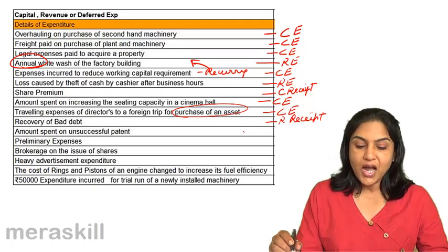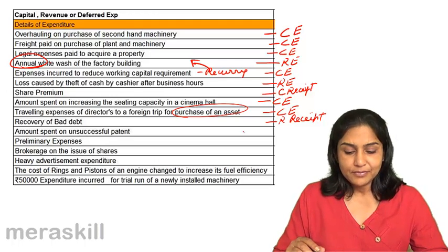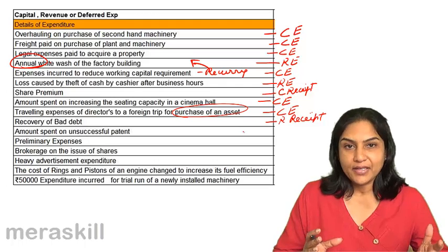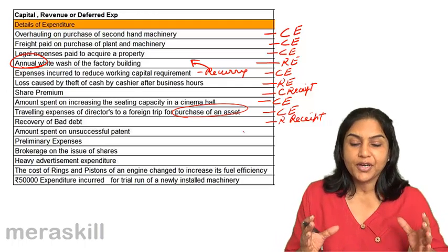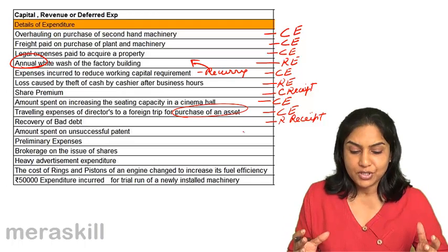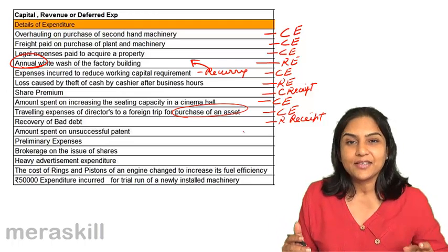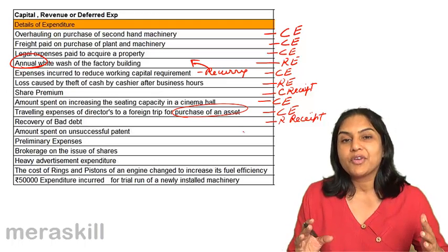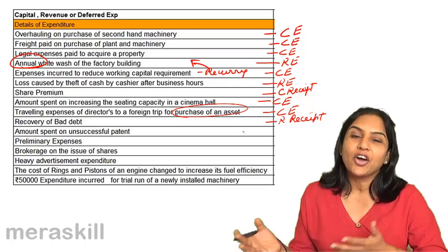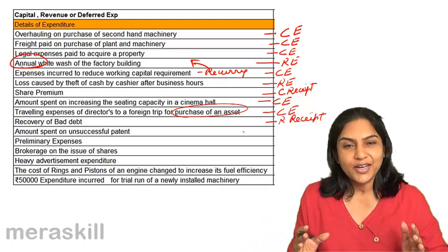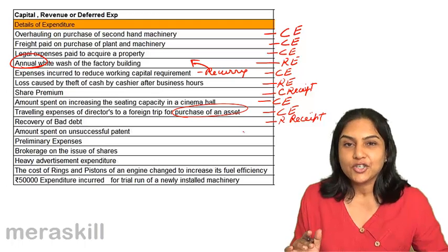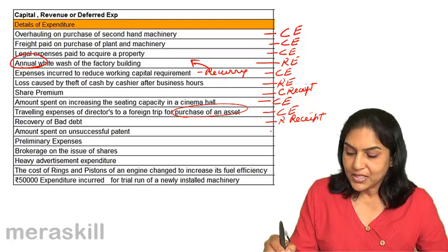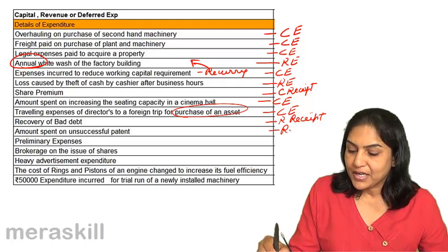Amount spent on an unsuccessful patent. We may have been trying to get patent rights, developed some technology, but were not able to get the patent. The amount spent has no enduring benefit. Therefore, it is not an asset and we simply write it off as an expense. The amount paid on an unsuccessful patent would be a revenue expenditure.